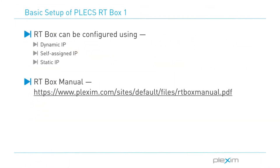Next, we configure the RT box. The RT box can be configured using a dynamic IP address, a self-assigned IP address, or a static IP address. For additional information on network configuration, refer to the RT box manual.